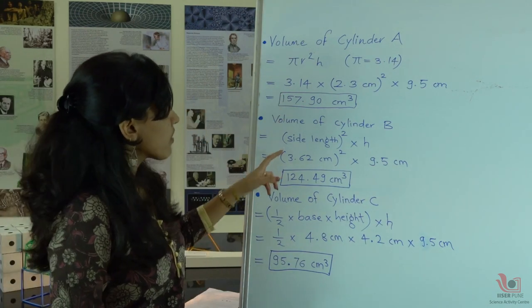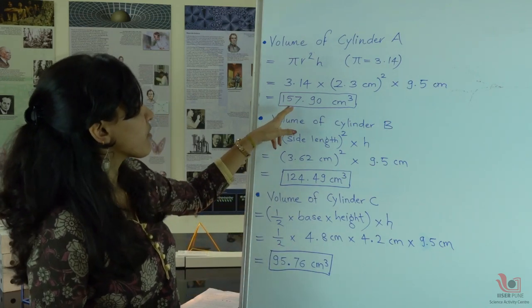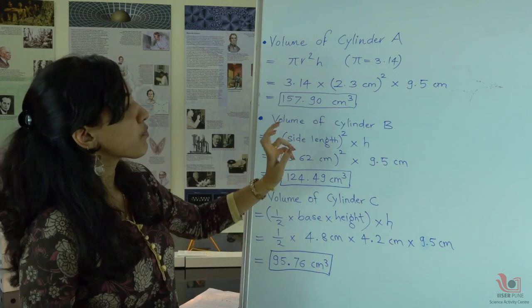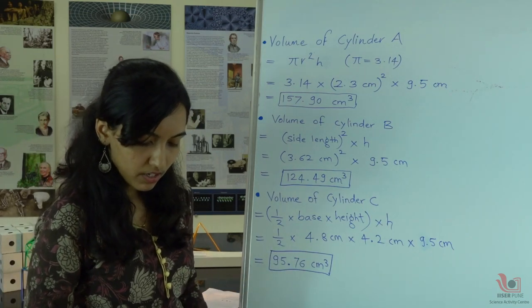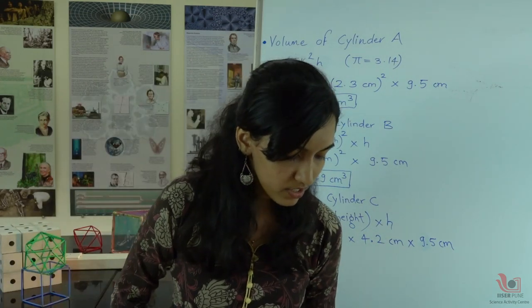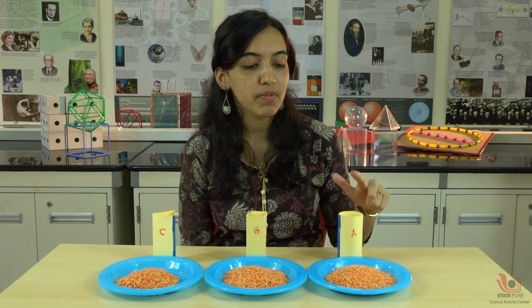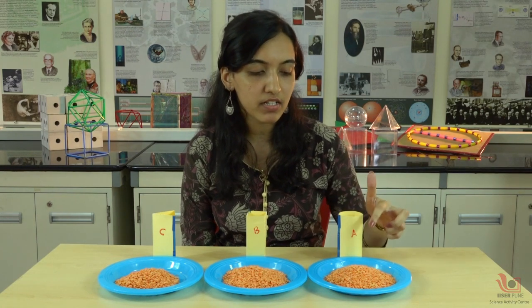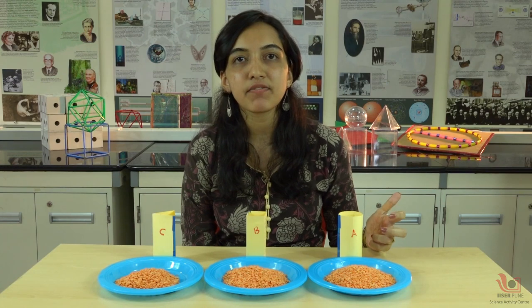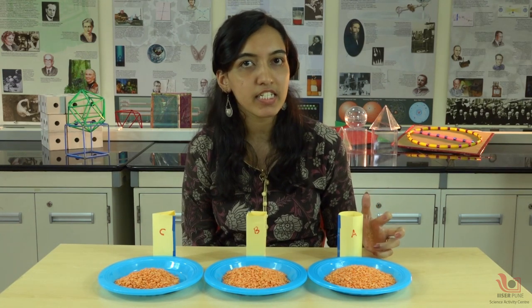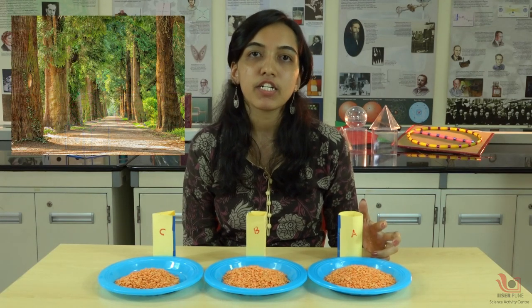From all these volumes, we have found that 157.90 cm³ is the highest volume, which belongs to the cylinder. The circular base cylinder holds the maximum content, as confirmed by both the experiment and the mathematical formula. So natural objects like trees tend to grow in a cylindrical shape to acquire maximum volume with minimum surface area, and the same is the case for kitchen utensils.